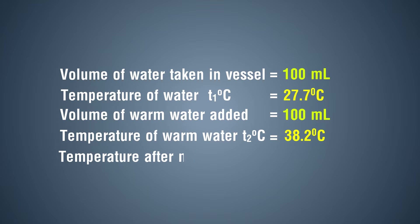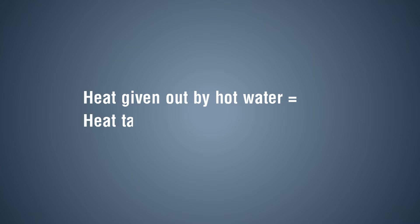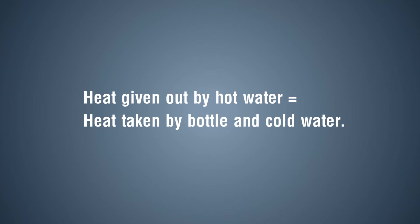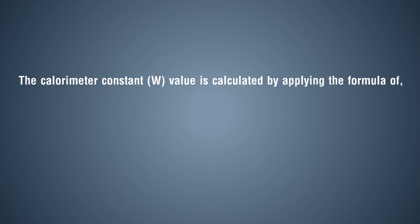Temperature after mixing T3 = 36.4 degree Celsius. Calculation: Heat given out by hot water equals heat taken by bottle and cold water. The calorimeter constant W is calculated by the formula: W = 4.184 × m × (T3 − T1) / (T2 − T3) − m.